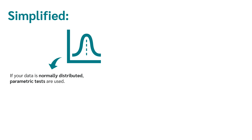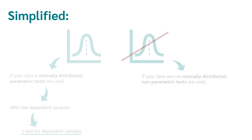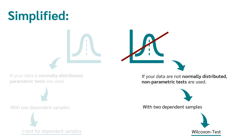To put it simply: if your data are normally distributed, you use a parametric test. In the case of two dependent samples, this is the t-test for dependent samples. If your data are not normally distributed, you use a nonparametric test. In the case of two dependent samples, this would be the Wilcoxon test.